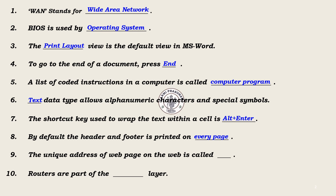8. By default, the header and footer is printed on every page. In the question, you should not get confused — header and footer is printed on the top of every page. 9. The unique address of a web page on the web is called URL. 10. Routers are part of the blank layer — Data Link Layer.